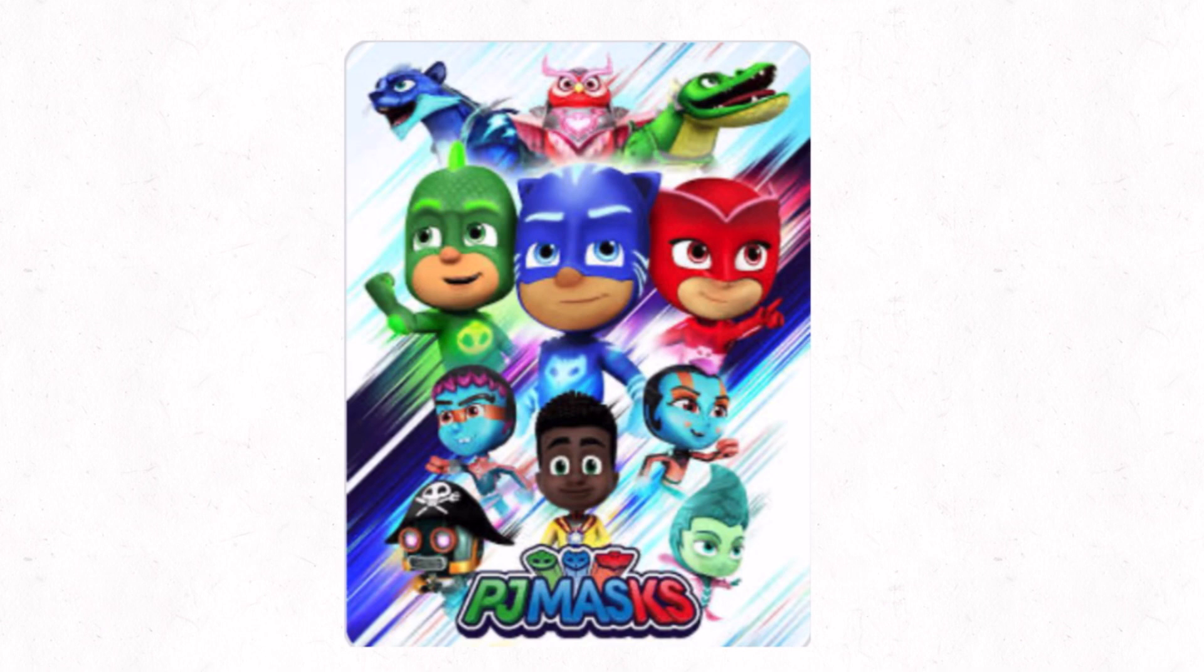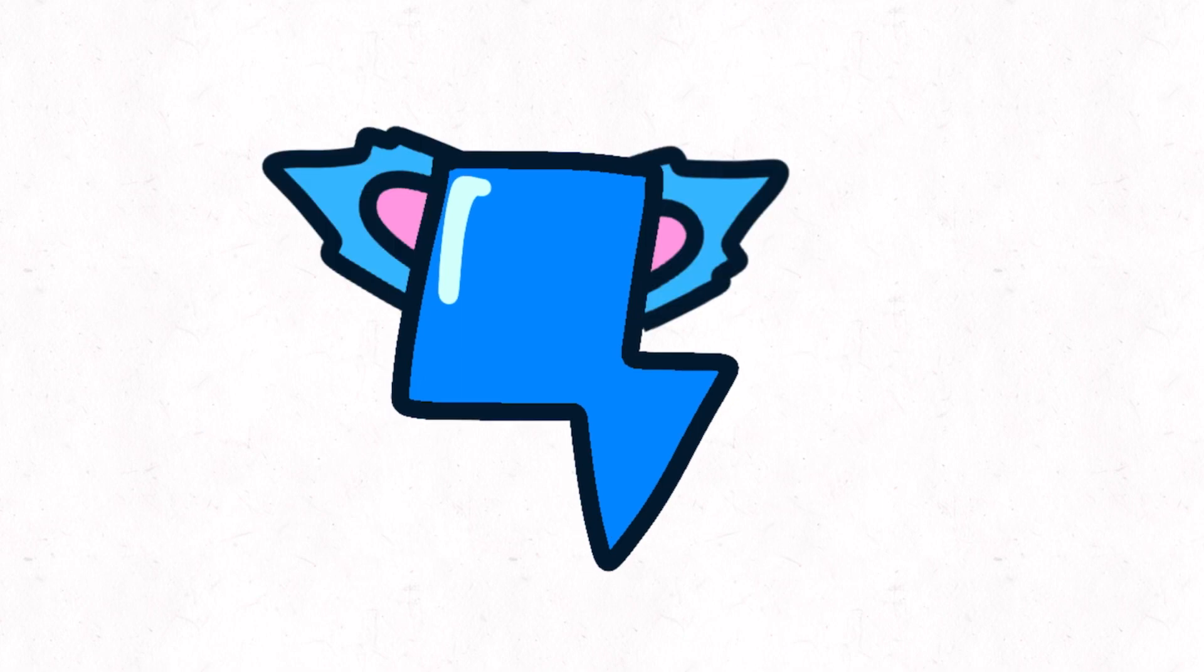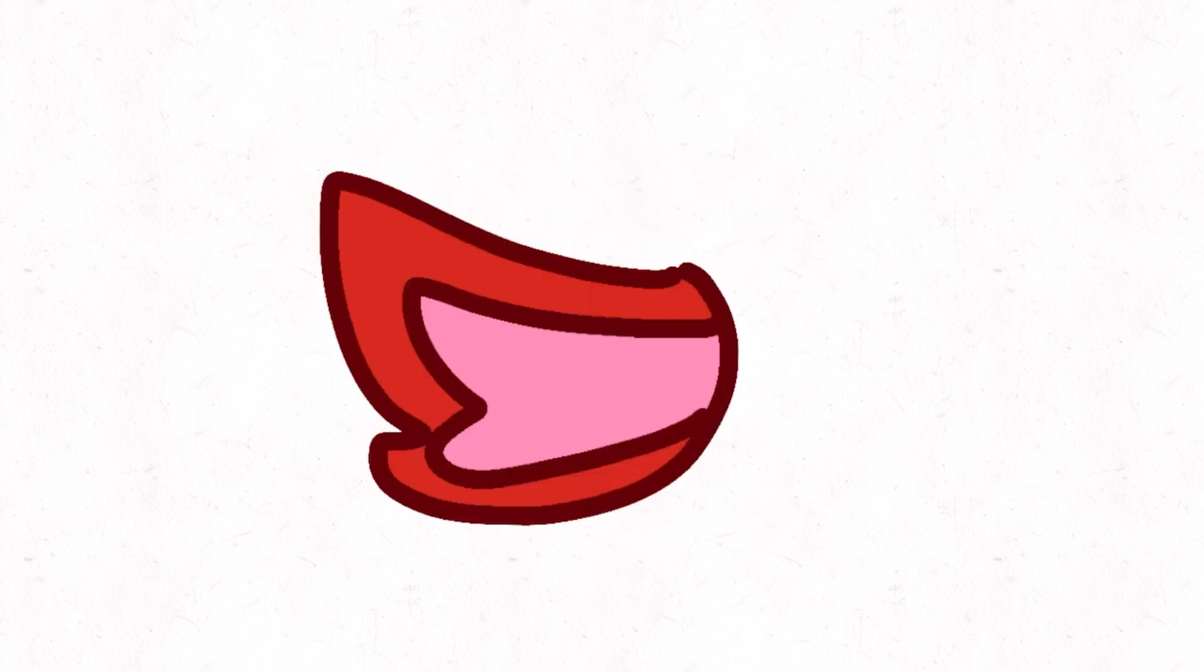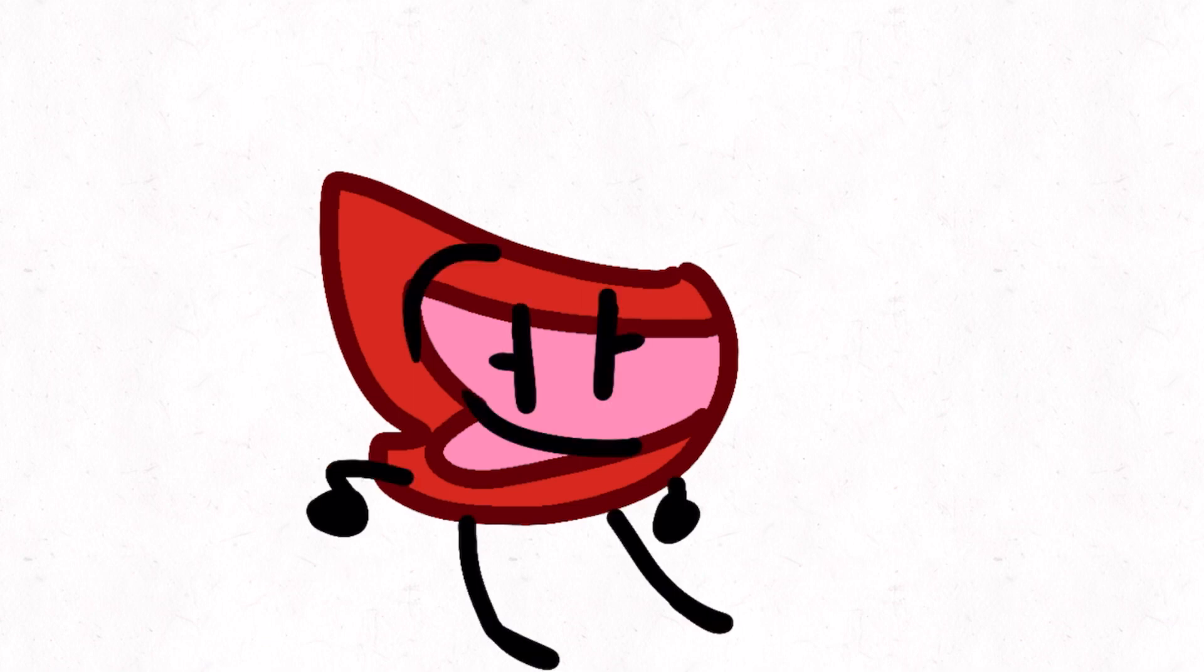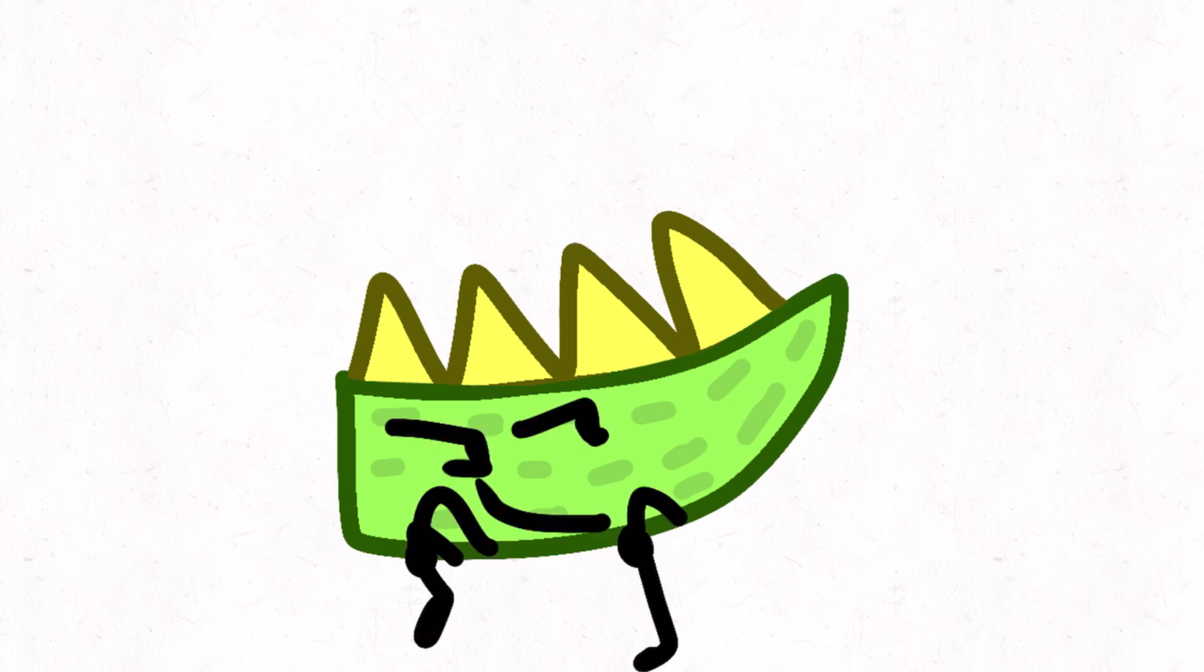Next is PJ Masks. Since Catboy is fast, we're going to make him lightning with some ears, his pattern, and there's Catboy. Owlette has wings, so we're going to make her wings. And Gekko is a lizard, so we're going to make him a lizard tail.